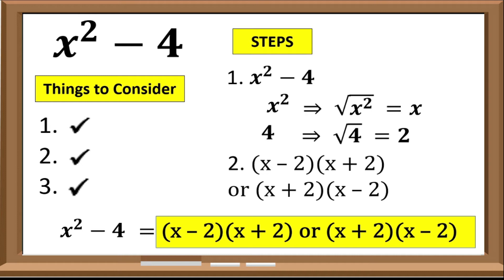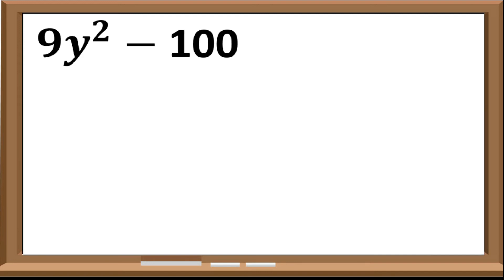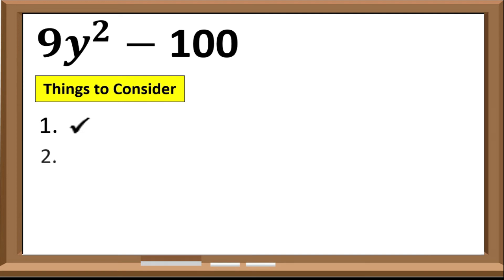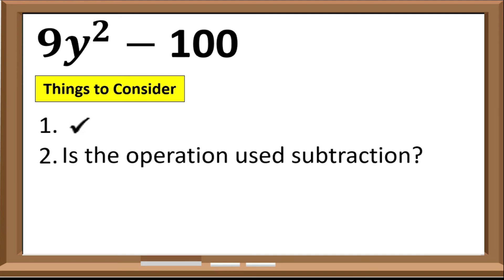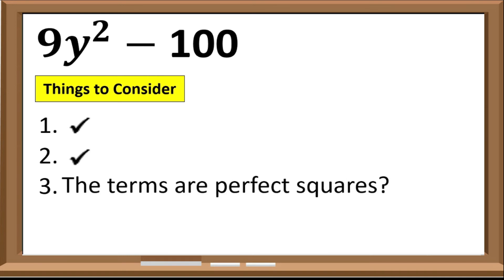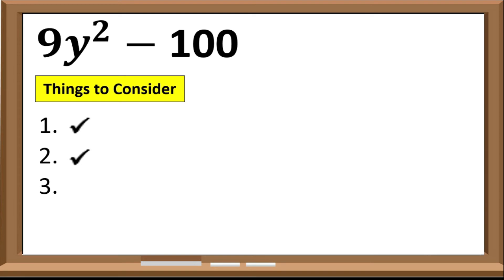Let us have another example. Let us check first if this expression can be factored using difference of 2 squares. First, is it a binomial? Check. Second, is the operation used subtraction? Check. Third, are the terms perfect squares? Check. Since all conditions are met, we can use difference of 2 squares on this expression.